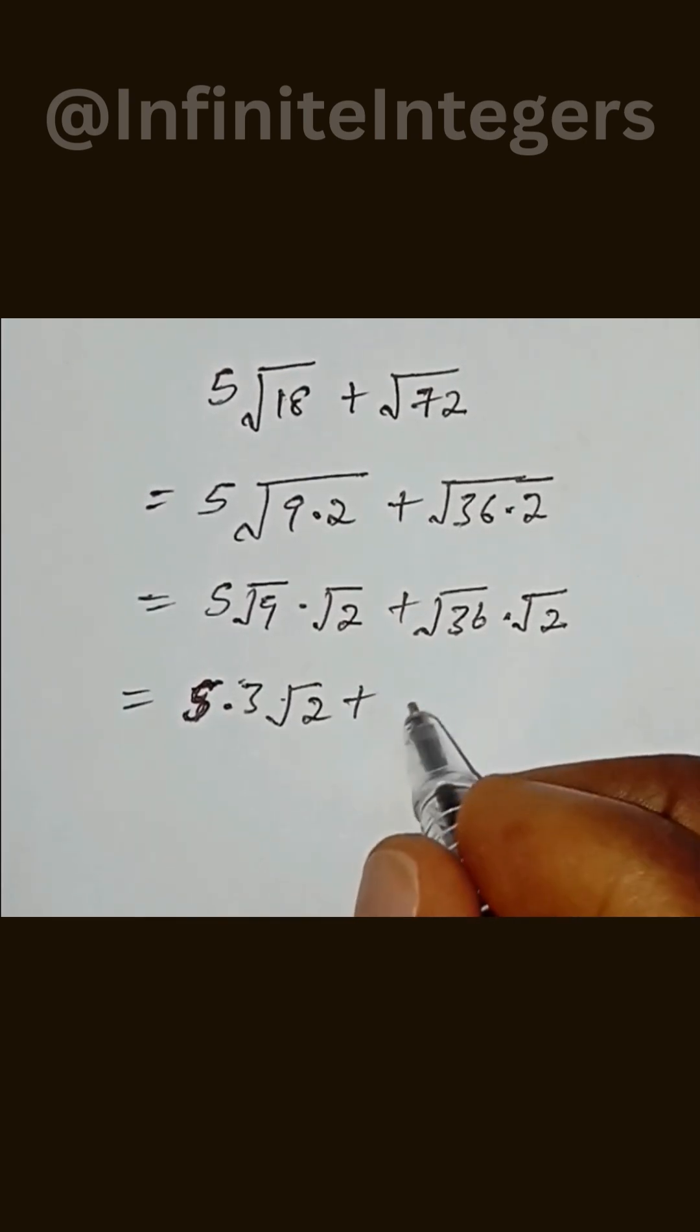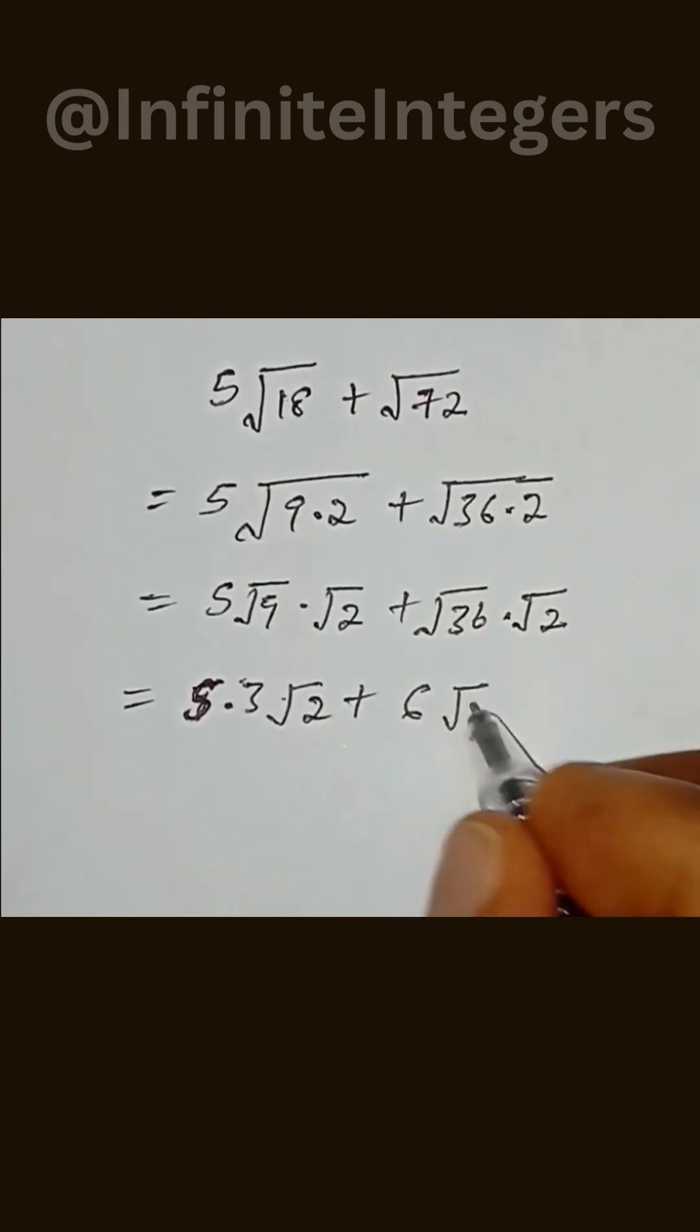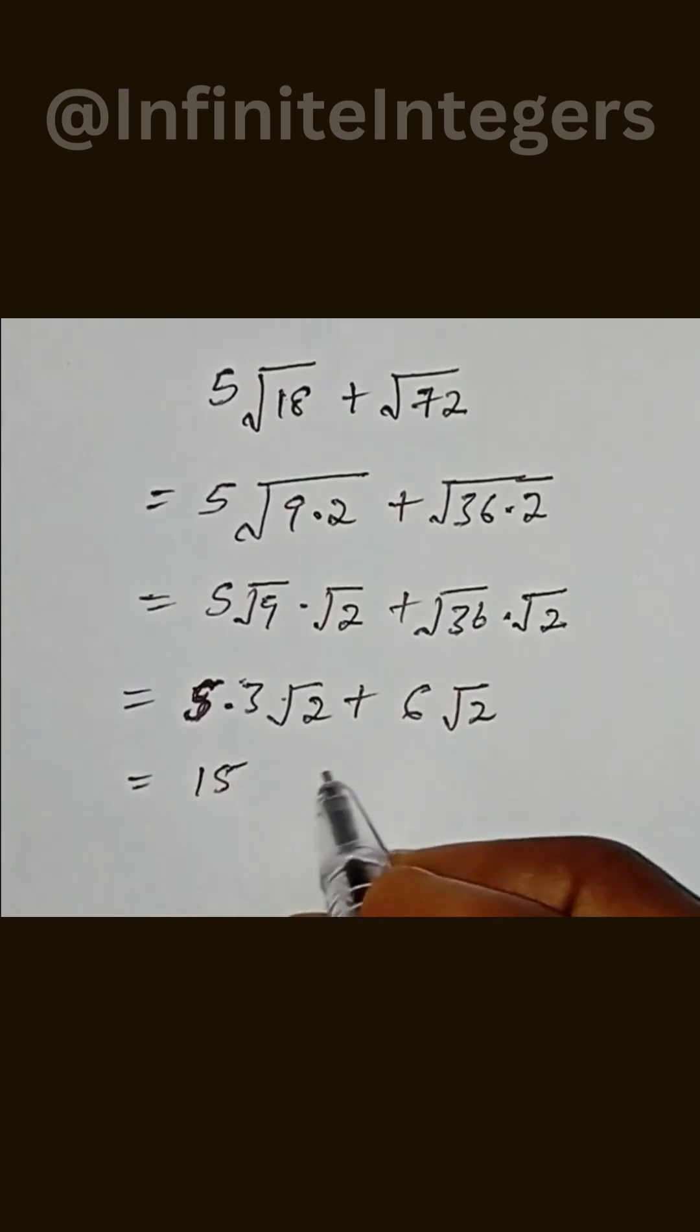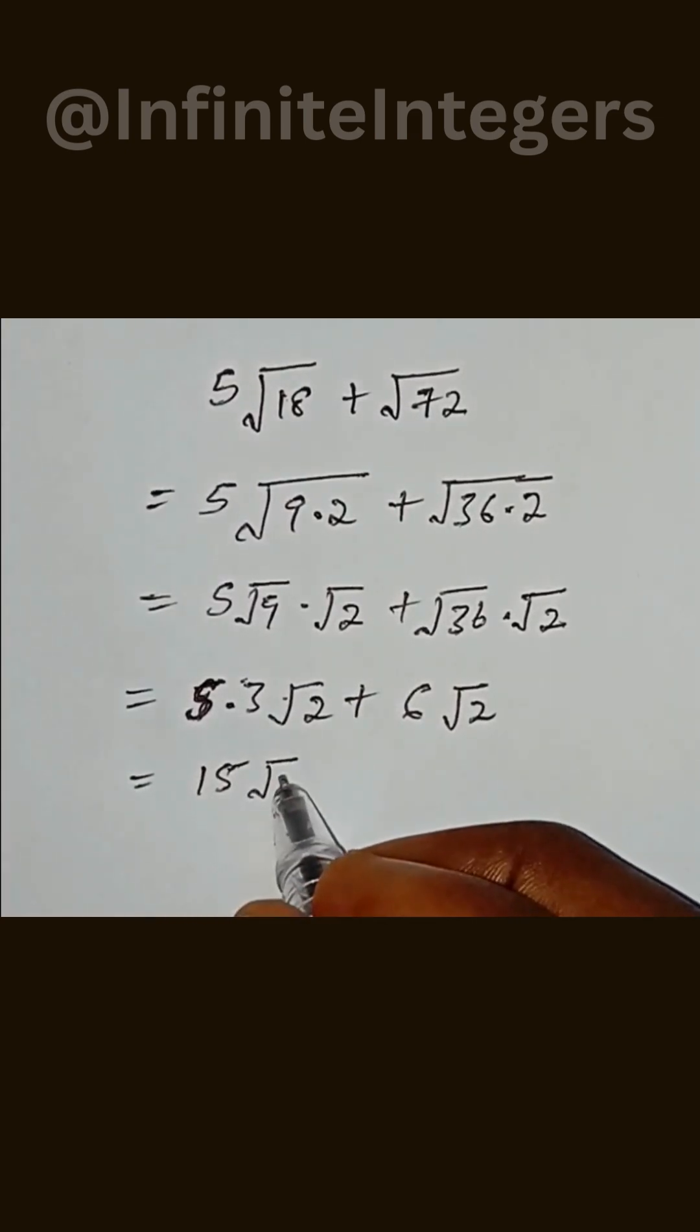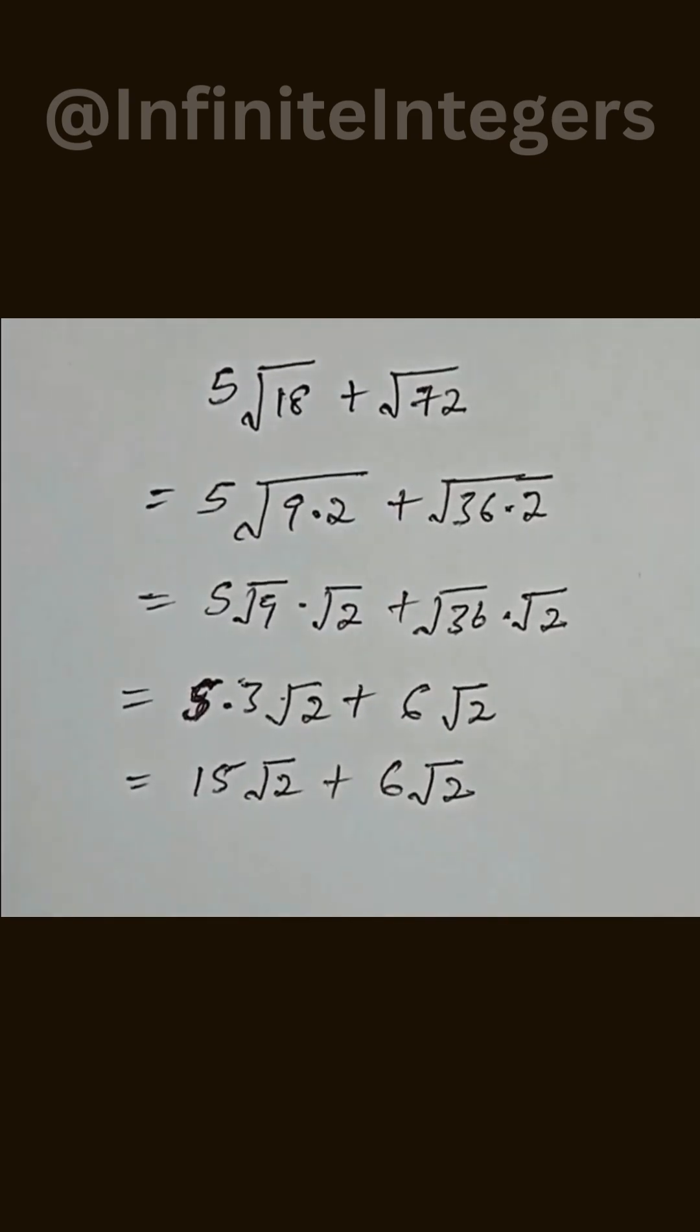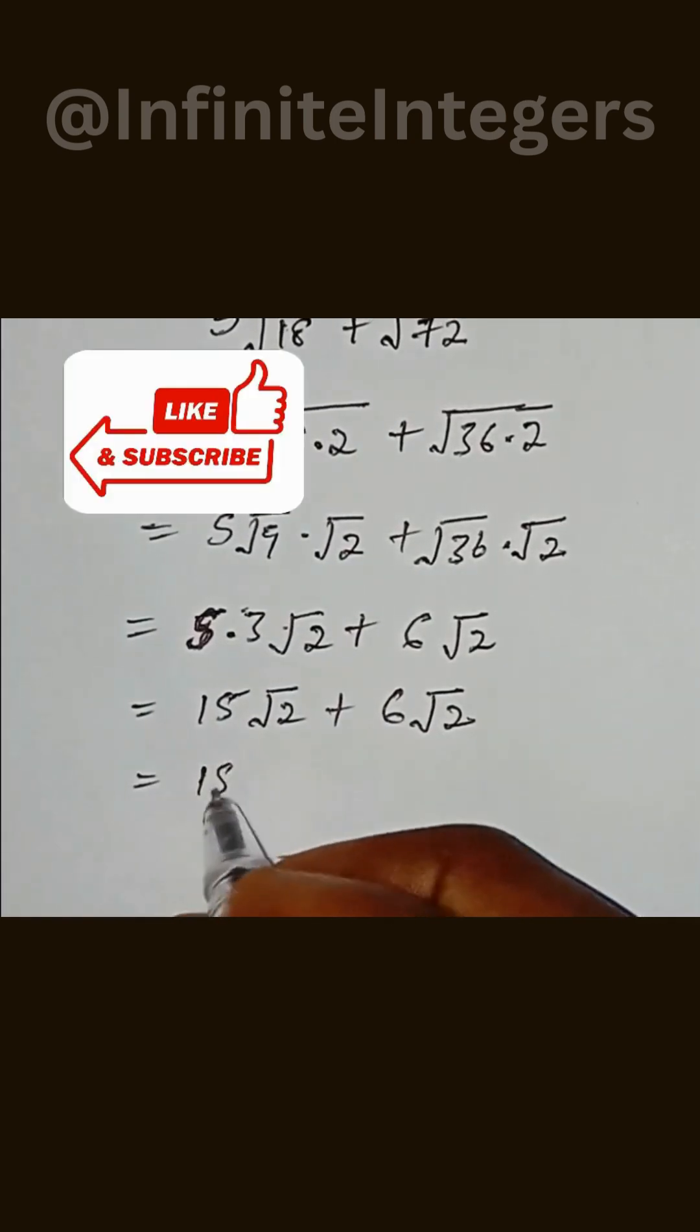Plus square root 36 is given as 6 square root 2, and this is equal to 5 times 3, we have 15 square root 2 plus 6 square root 2. If we factor out square root 2, we have 15 plus 6 into bracket, then square root 2.